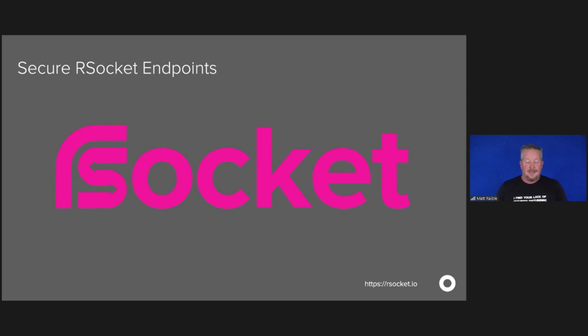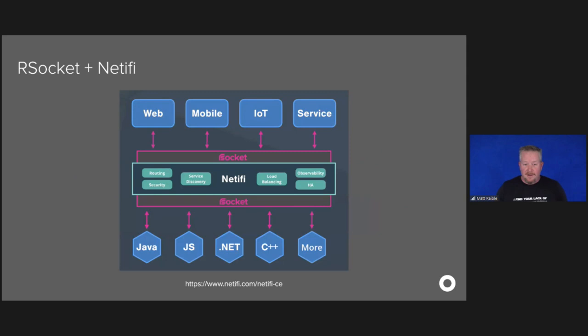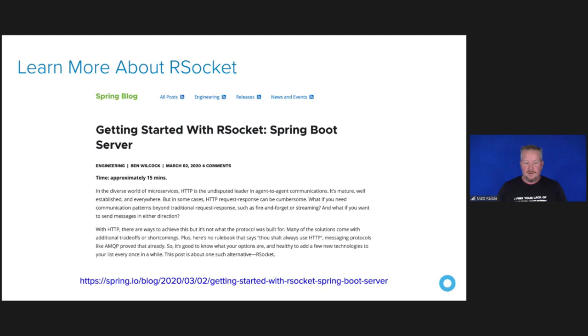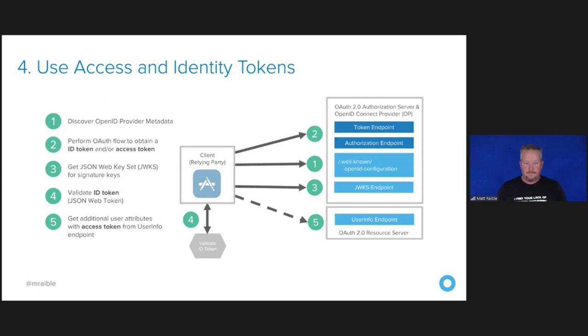RSocket is an application protocol providing reactive stream semantics over an asynchronous binary boundary. Netify is one of the main companies behind RSocket. If you want to do secure RSocket, you can deploy on Netify and they will provide that as a service. You can also use Spring Security 5.3.0 and higher — it has full support for securing RSocket applications. If you want to get started with RSocket, I'd recommend the blog post from Ben Wilcock: Getting Started with RSocket and Spring Boot Server.